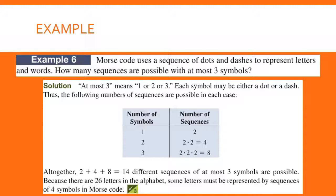If you have two symbols, you can have two dashes, two dots, a dash and a dot, or a dot and a dash — so there are four different combinations. If you have three symbols, there are eight possibilities. All together, we have two plus four plus eight, which is 14. Since there are 26 letters in the alphabet, some letters are represented by sequences of four symbols in Morse code.